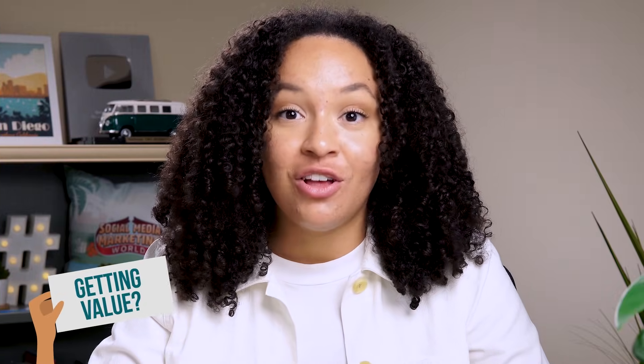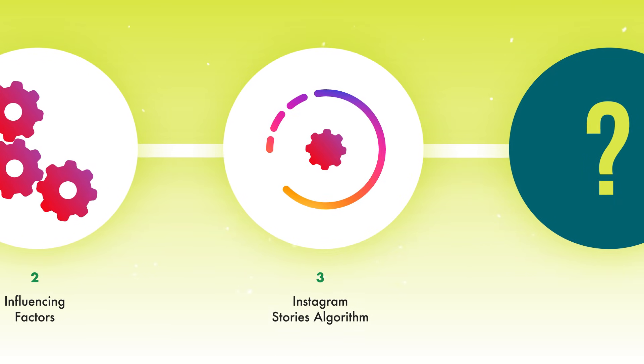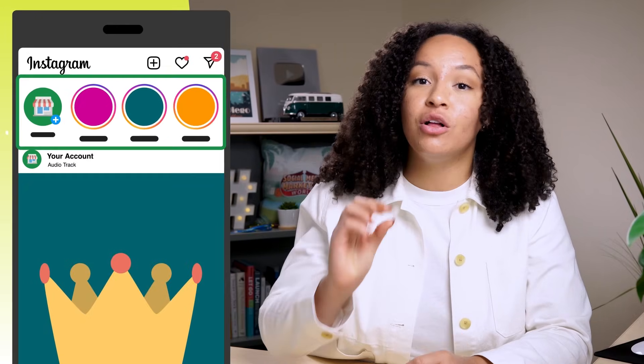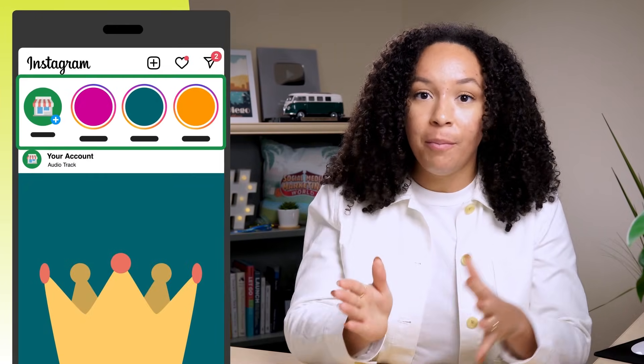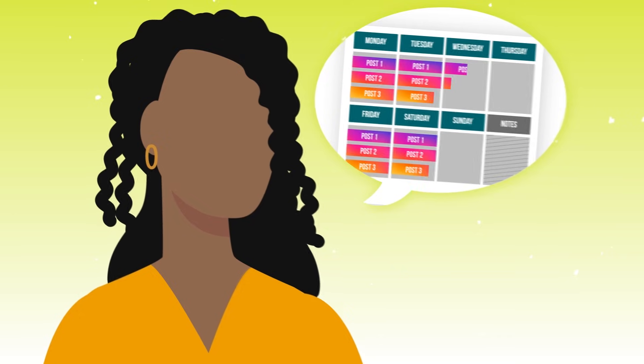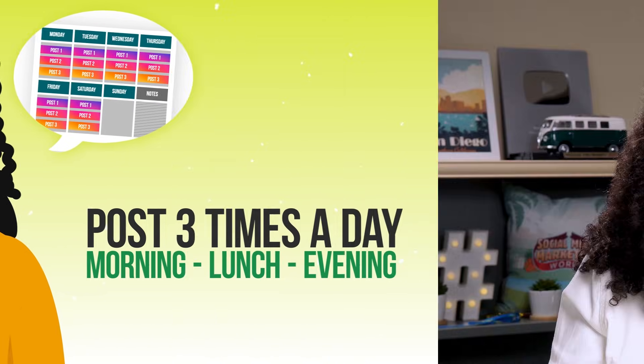Now that we've covered the three factors on how the algorithms work, let's break each down in detail. Let's start with Instagram Stories. Timeliness is a huge factor when it comes to the Stories feed — the bubbles closer to the top of your Stories feed are the ones that have been posted more recently. You ideally want to post maybe three times a day — morning, lunch, and evening — but you want to avoid dumping all your stories at one time, because you're really not going to boost the timeliness factor.